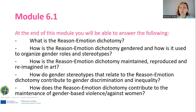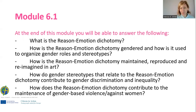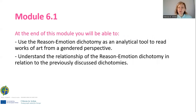At the end of module 6, you will be able to answer the following questions: What is the reason-emotion dichotomy? How is it gendered and how is it used to organize gender roles and stereotypes? How is the reason-emotion dichotomy maintained, reproduced and re-imagined in art? How do gender stereotypes that relate to the reason-emotion dichotomy contribute to gender discrimination and inequality? How does the reason-emotion dichotomy contribute to the maintenance of gender-based violence against women? You will also be able to use the reason-emotion dichotomy as an analytical tool to read works of art from a gender perspective, and understand its relationship to the previously discussed dichotomies.